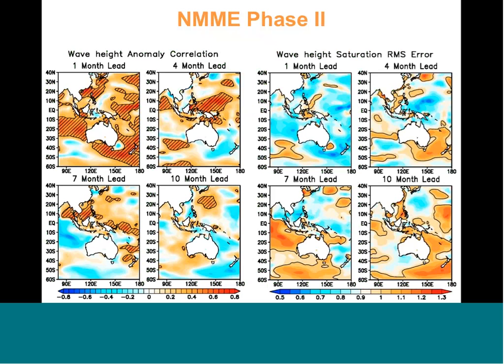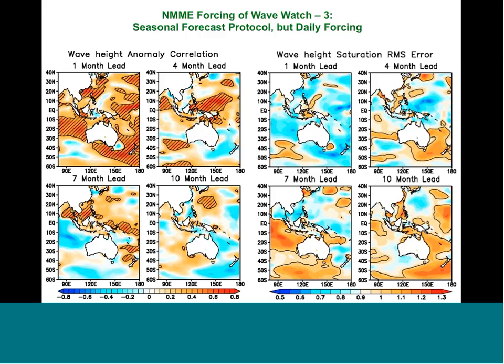Before getting to sub-seasonal results, I wanted to talk about some applications of the seasonal forecast protocol. Using daily data from CCSM4 to force WaveWatch 3, the results look at anomaly correlation with daily-forced data accumulated into monthly means as output for significant wave height. The four left panels are the correlation and the four right panels are the saturated RMSE. You can see all the way out to four, maybe even seven months in some places, there's some indication we can actually make forecasts of significant wave height.